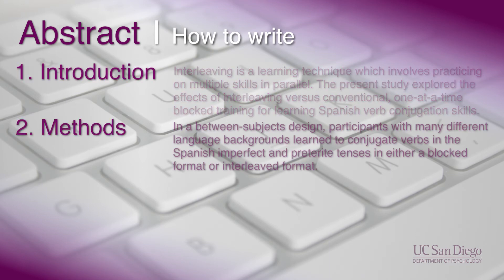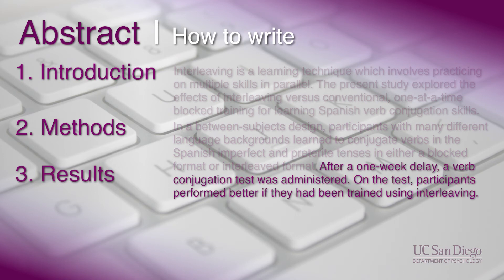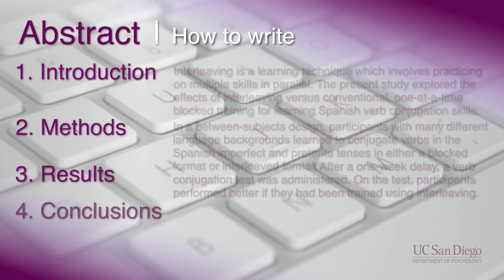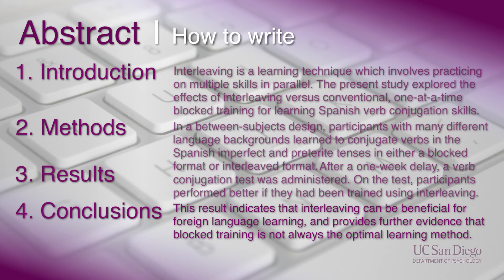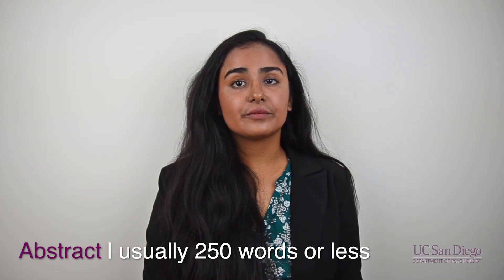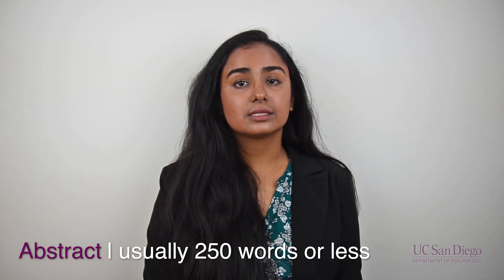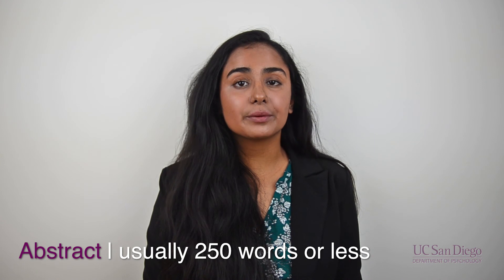So how do you write an abstract? Here is one approach: divide up the process into all four parts, write one to two sentences for each, then combine it into one full paragraph — and with that you have your abstract. APA style abstracts are typically not longer than 250 words, and sometimes even shorter, so you should try to write as concisely as possible.